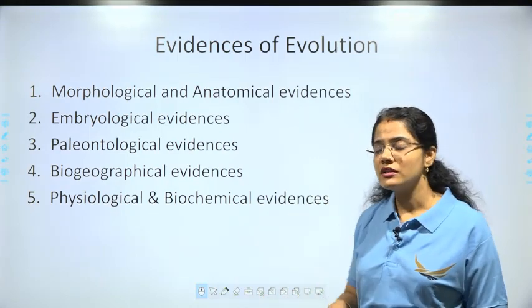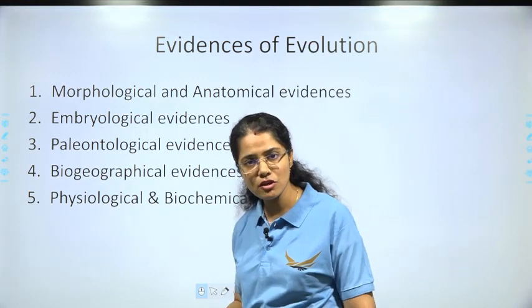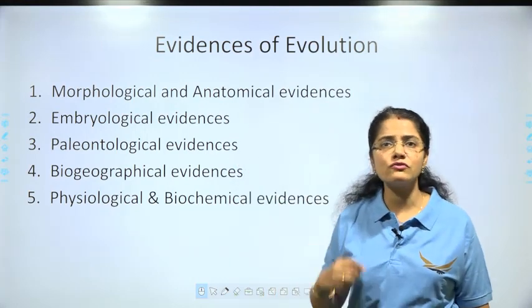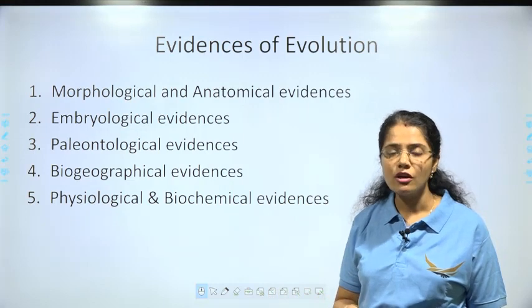And finally, physiological and biochemical evidence helps us understand the kind of physiology and biochemical reactions taking place in simpler life forms that got more and more complex into present-day organisms. These are the five categories of evidences of evolution, and each one we are going to discuss in detail.